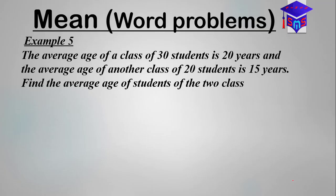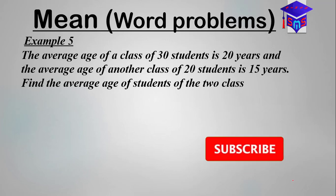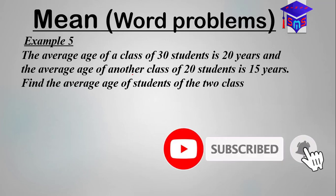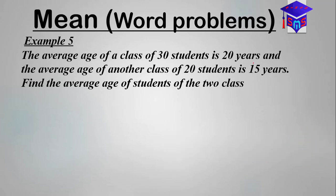We are looking at the solution to this question. The average age of a class of 30 students is 20 years, and the average age of another class of students is 15 years. We are supposed to find the average age of students of the two classes combined. The number of students in one class is 30 and in the other class is 20.